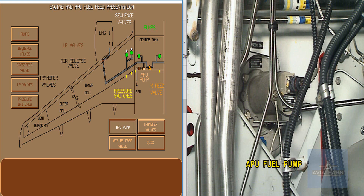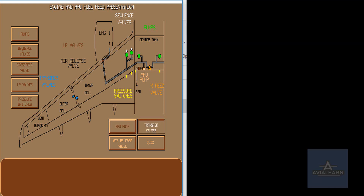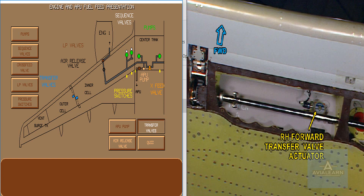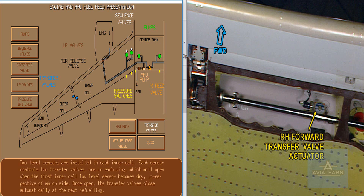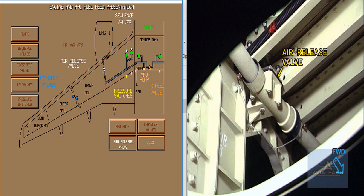A specific fuel pump supplies the APU if the tank pumps are not operating; this pump takes fuel from the left supply line. Transfer valves allow fuel to be transferred from outer to inner cells — they open when the fuel level reaches the low-level sensors in the inner cell. Each engine supply line has an air release valve at its highest point to enable the line to be bled.